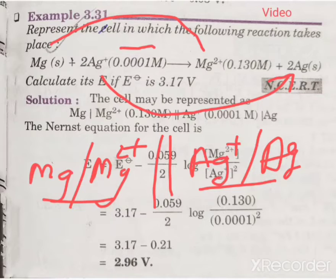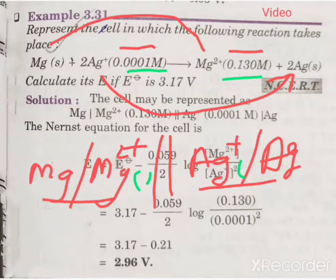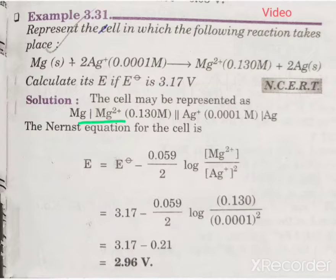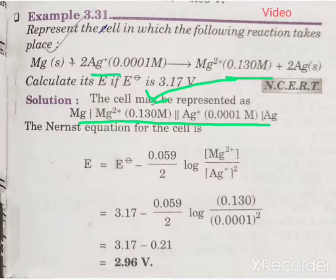In writing the cell representation, if concentration values are given, you must include them. Here the concentration of Ag⁺ is 0.0001 M and the concentration of Mg²⁺ is also given. You write these concentration values in brackets next to the corresponding species in the cell representation. So Mg²⁺ concentration is written in brackets on the left, and Ag⁺ concentration is written in brackets on the right side of the cell representation.